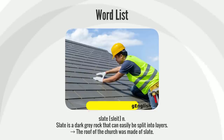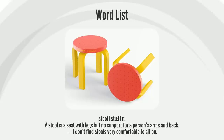Slate is a dark gray rock that can easily be split into layers. The roof of the church was made of slate.